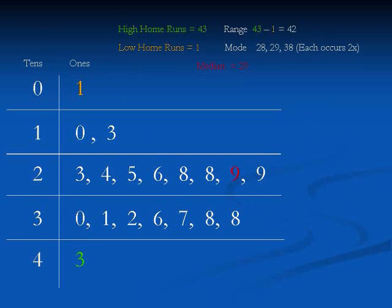There are some distinct advantages of creating stem and leaf plots. For example, when you look at the data, you can easily figure out which is the highest amount and which is the lowest amount. According to this data, the highest amount of home runs hit by Ted Williams was 43, and the lowest was 1. So the range would be 42 home runs.